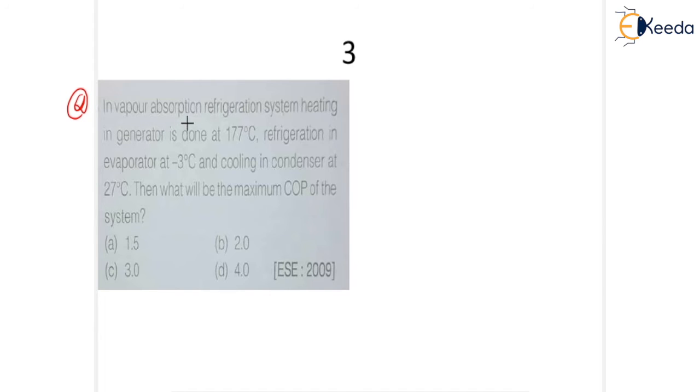In vapor absorption refrigeration system, heating in generator is done at 177 degrees Celsius, that means Tg is 177 degrees Celsius. Refrigeration in evaporator, that means your evaporator temperature is minus 3 degrees Celsius, and cooling condensation temperature is 27 degrees Celsius. So first of all you need to add 273 degrees to convert this Celsius data to Kelvin.